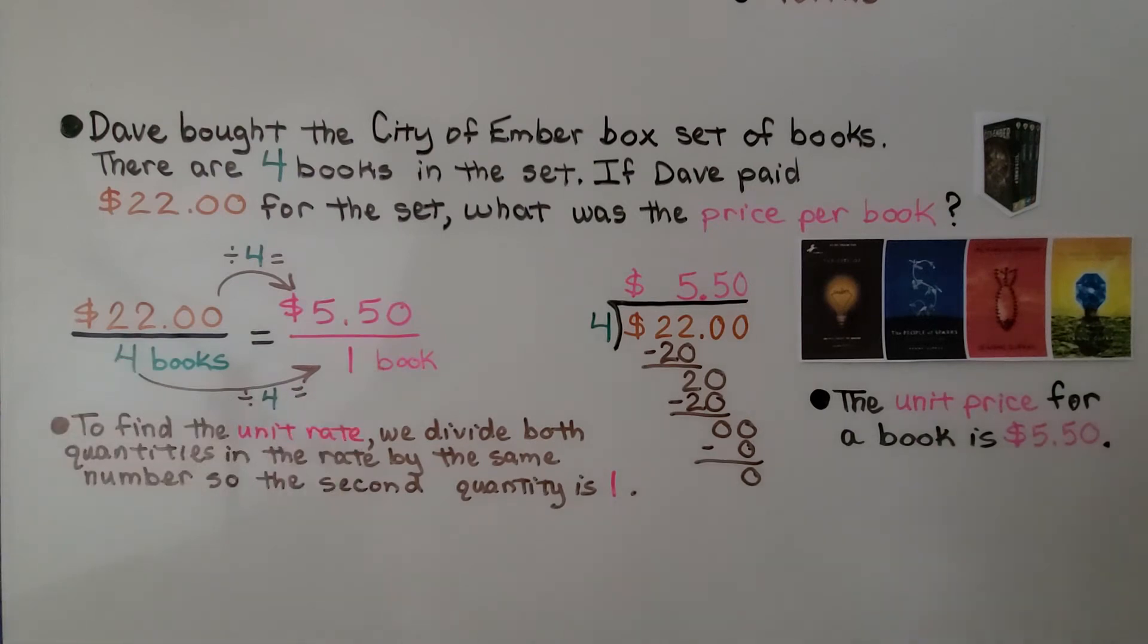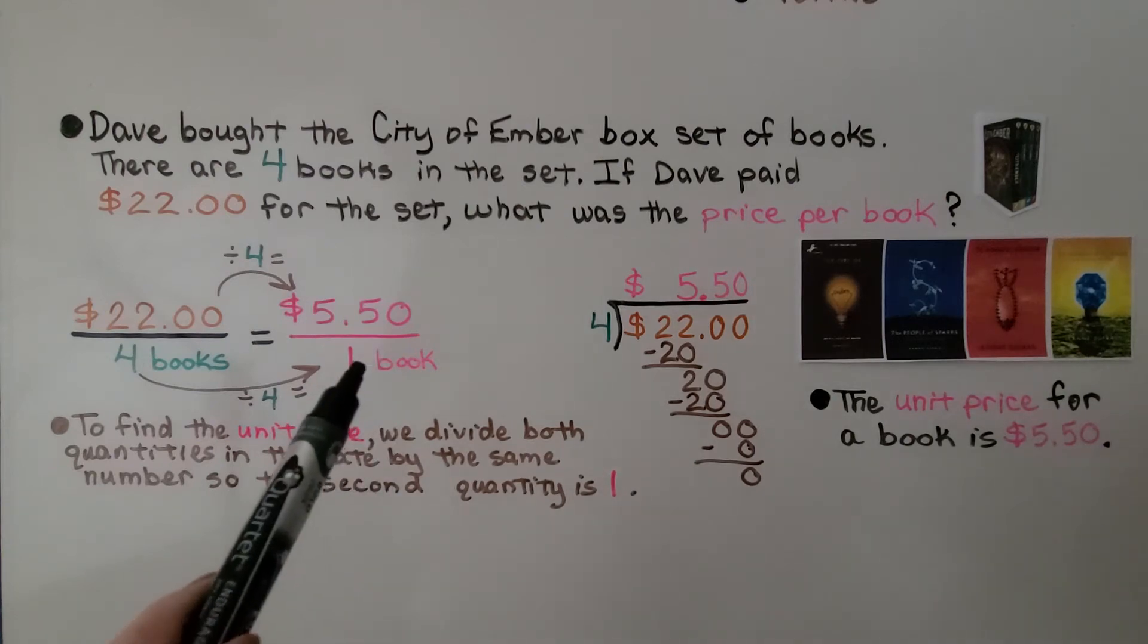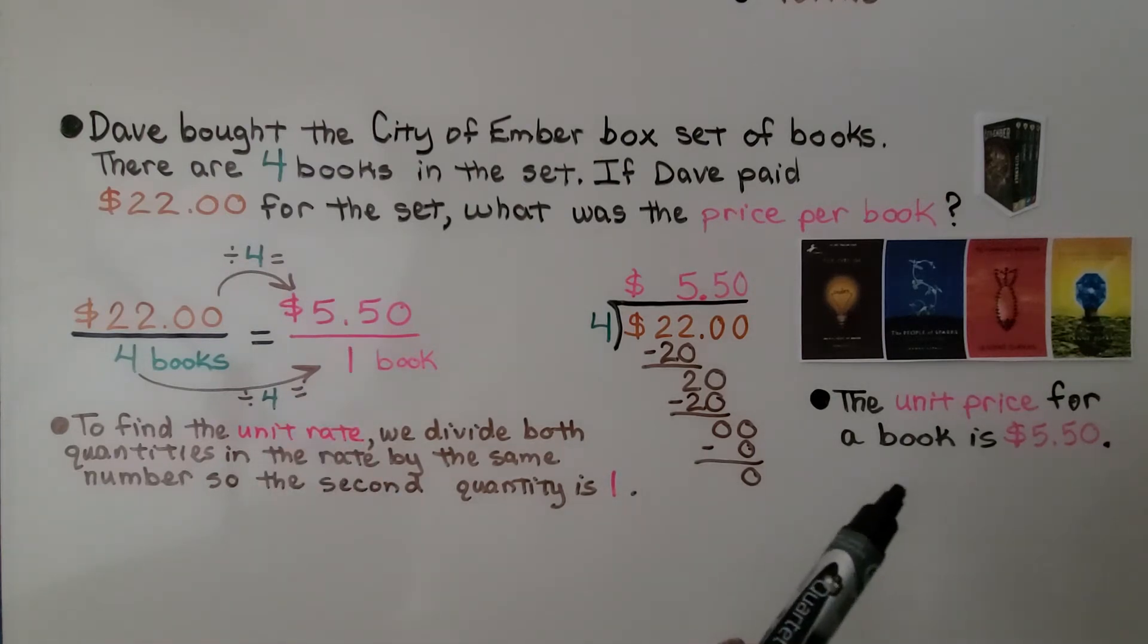Four divided by four is one. So to find the unit rate, we divide both quantities in the rate by the same number. In this case, it's four, so that the second quantity is one. So we know the unit price for the book is $5.50.